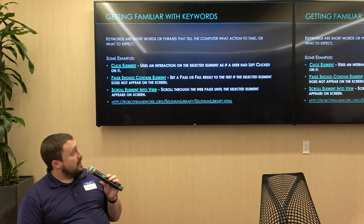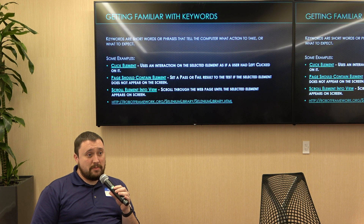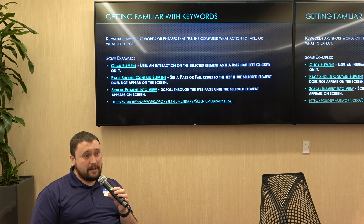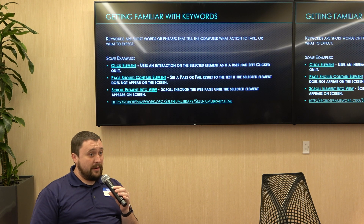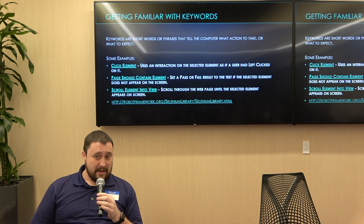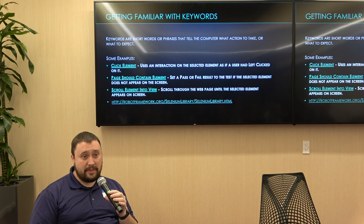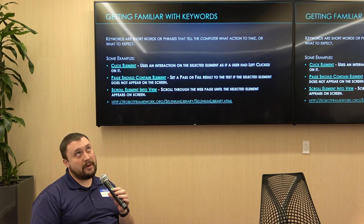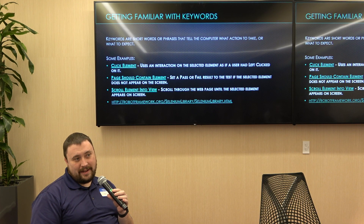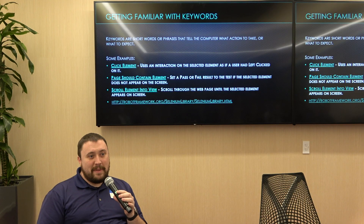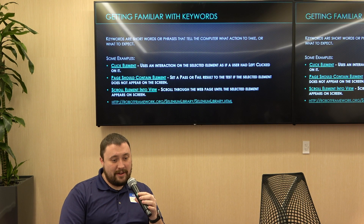Looking at keywords — they're going to be pretty much what you would expect. If you wanted to click on something, the keyword is actually going to be 'click.' You want to scroll something, it's going to be 'scroll.' You want to zoom in, it's going to be 'zoom.' The only thing you'll really have to learn outside of that is object identification — you need to learn XPath, CSS, or identification via accessibility identifiers. They all work fine.